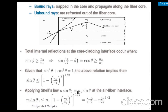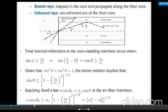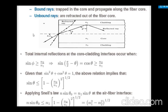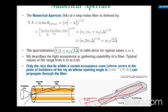Applying Snell's law: n·sin θ₀ = n1·sin θ. We find that n·sin θ₀ ≤ n1·√(1 − (n2/n1)²)^(1/2). The numerical aperture is defined as NA = n·sin θ₀_max = √(n1² − n2²)^(1/2). This is our formula. For this, we write n1² − n2² using the identity a² − b² = (a+b)(a−b).